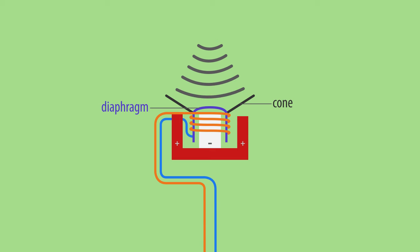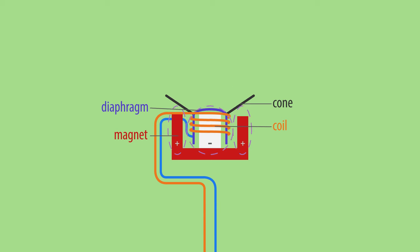Sound waves hit a thin diaphragm which causes it to move. This diaphragm is attached to a coil surrounded by a magnet. This magnet creates a magnetic field around the coil.